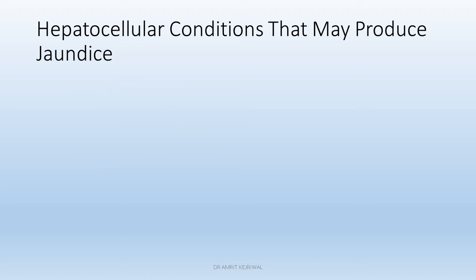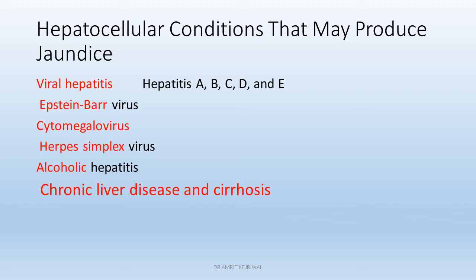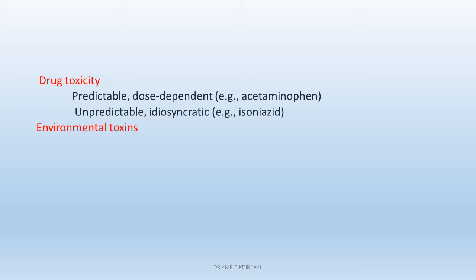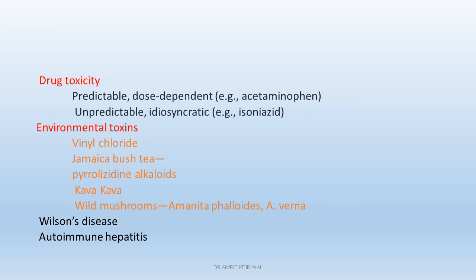Hepatocellular conditions that may produce jaundice include viral hepatitis, Epstein-Barr virus, cytomegalovirus, herpes simplex virus, alcoholic hepatitis, chronic liver disease and cirrhosis — one of the most important causes. Drug toxicity and environmental toxicity can also cause hepatocellular injury. Predictable, dose-dependent toxicity is seen with acetaminophen; unpredictable or idiosyncratic toxicity is seen with isoniazid. Environmental toxins include vinyl chloride, Jamaican bush tea, pyrrolizidine alkaloids, kava-kava, wild mushrooms such as Amanita phalloides, and vernal toxins. Wilson's disease and autoimmune hepatitis are also important causes.